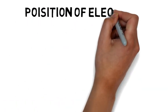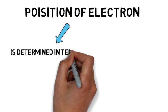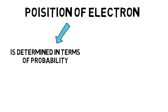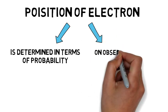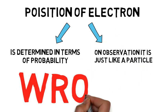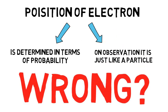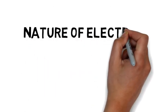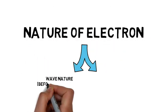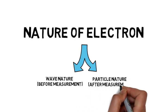I mentioned the electron position is determined in terms of probability, but when we observe the electron it looks like just a particle. So what is happening here? Is anything wrong? Here there are two things about the electron: it is a wave before measurement and after measurement it is a particle. Does it mean there are two different worlds?